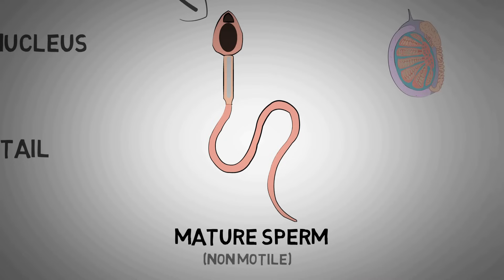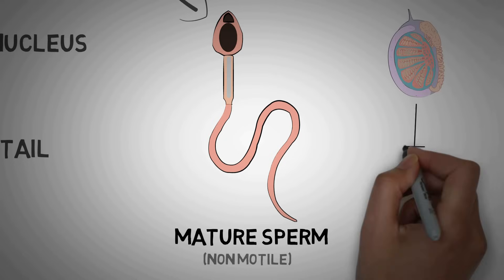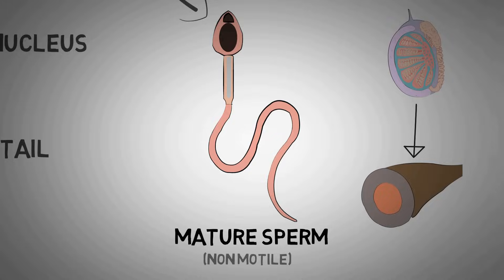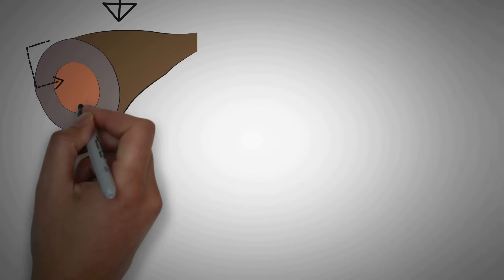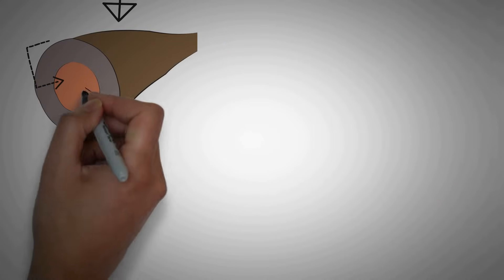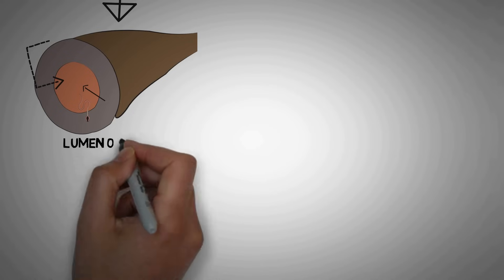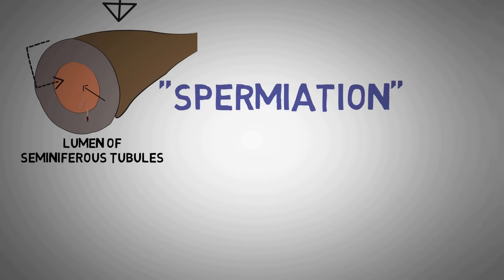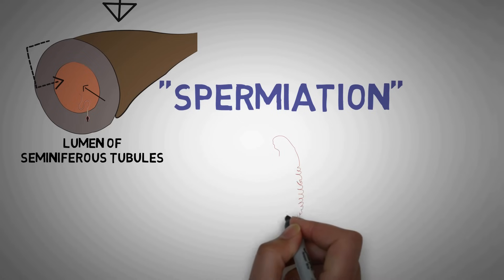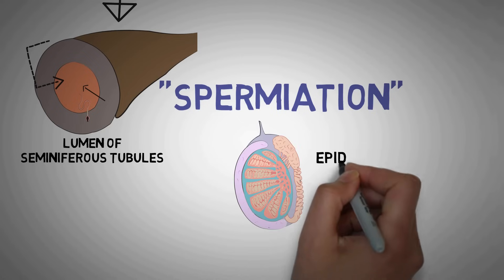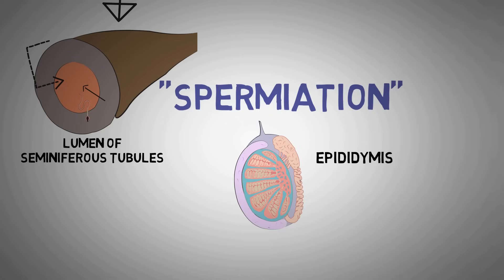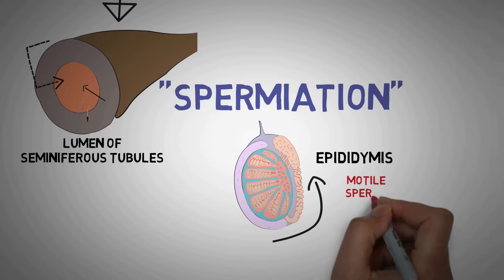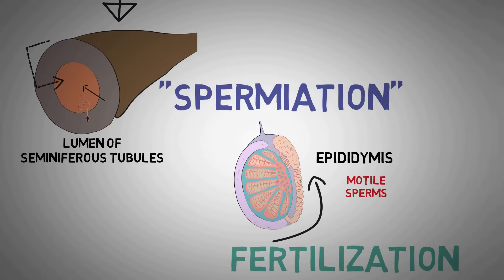The mature sperms are still non-motile at this stage. The process of spermatogenesis runs in the wall of the seminiferous tubule, and the mature sperms are then released into the lumen through a process called spermiation. The sperms then spend a few days in the epididymis and gain motility, making the motile sperms capable of fertilization.